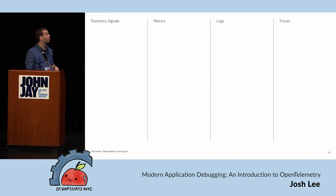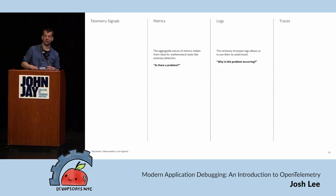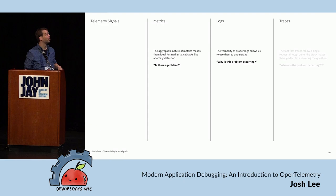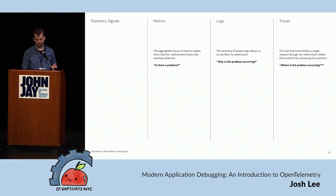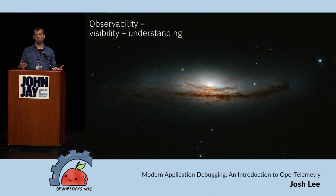We have three signals that OpenTelemetry currently supports: metrics, traces, and logs. Metrics are great for answering the question 'Is there a problem?' — they give us alerts, they tell us there's smoke, and when we see smoke we know there's fire. Logs are great once we have the right log message — they tell us exactly what the problem is: 'database connection not available,' 'syntax error,' whatever it is. But finding that log message is the challenge. That's where traces come in: where is the problem occurring, and most importantly, who is the domain expert that can actually help address this problem?